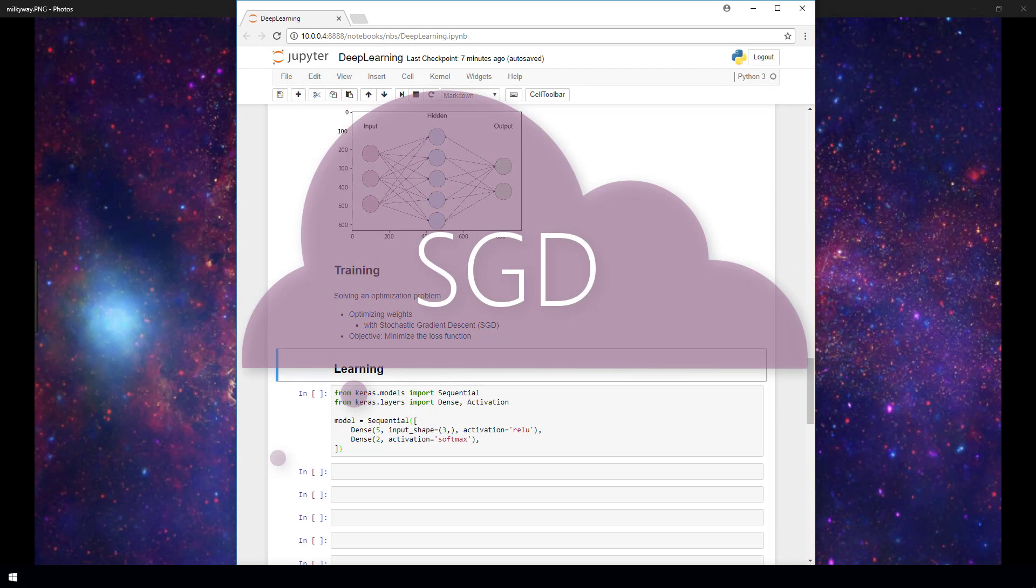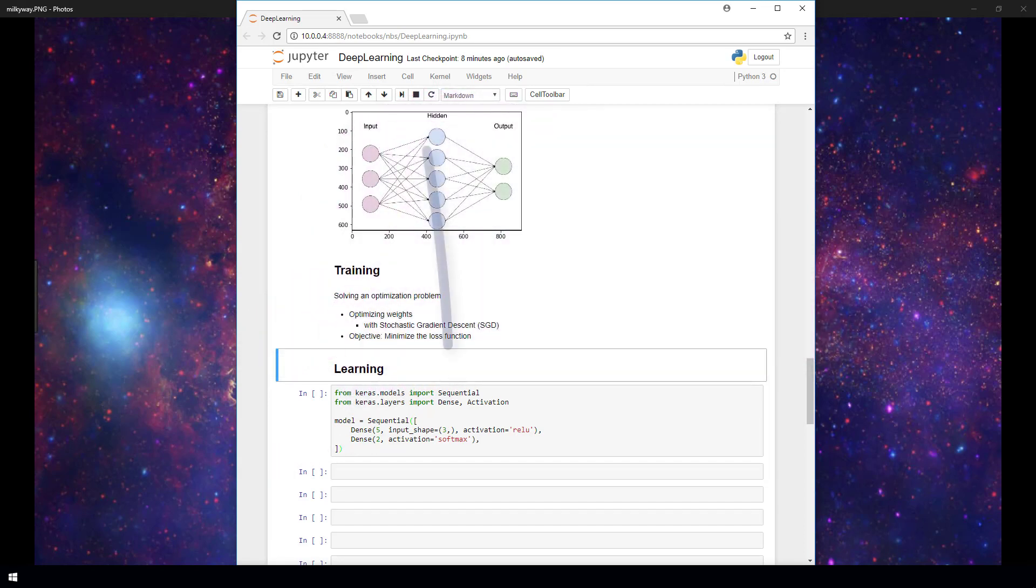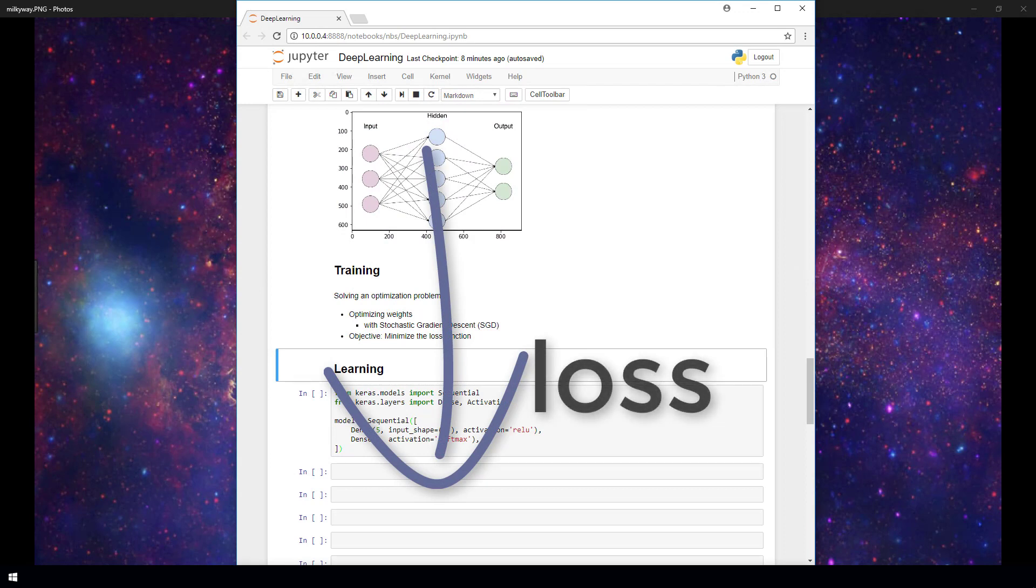Now, when you have any optimization problem, you have to have an objective. So what is SGD's objective in attempting to set the model's weights? The objective is to minimize a given loss function. So SGD would be assigning the weights in such a way to make this loss function as close to zero as possible.